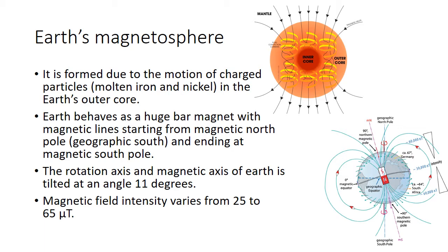The magnetic north pole is situated at the geographic south and the magnetic south pole is situated at the geographic north pole. The magnetic poles are shifted from the rotation axis of the earth by 11 degrees — that is, the rotation axis and the magnetic axis of the earth are tilted from each other at 11 degrees. The magnetic field intensity varies from 25 microtesla to 65 microtesla, and it is very feeble. This magnetic field intensity varies with the altitude, longitude, latitude, and it is different at different layers of the atmosphere.